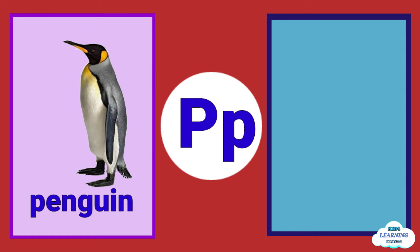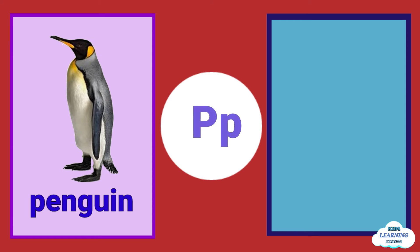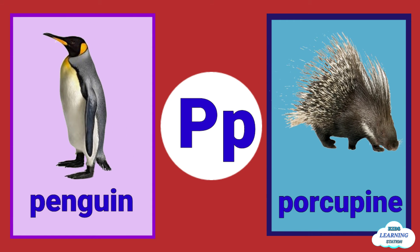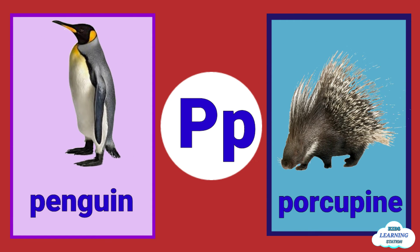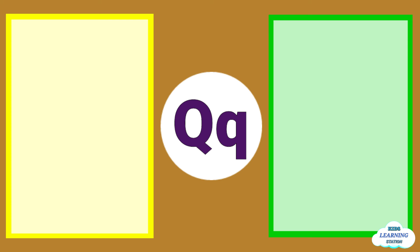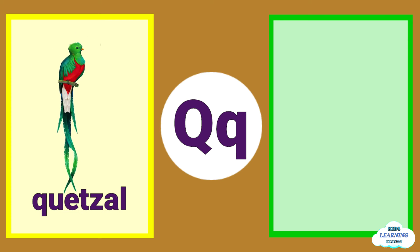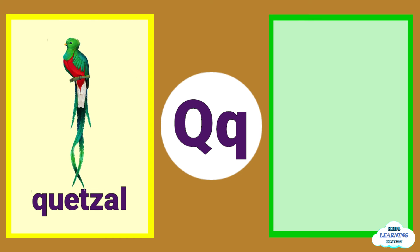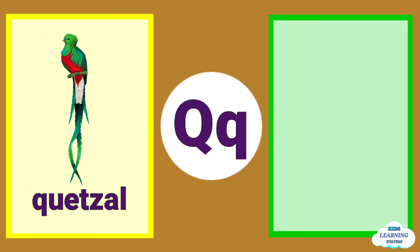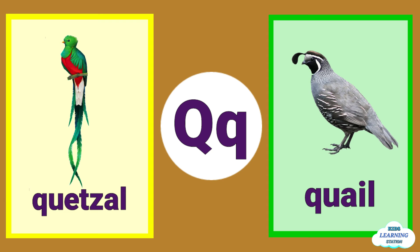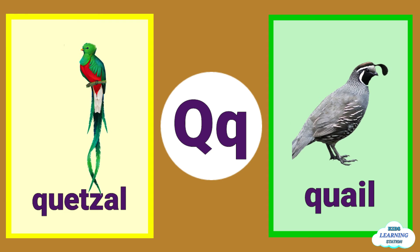P is for porcupine. Q is for quetzal. Q is for quail.